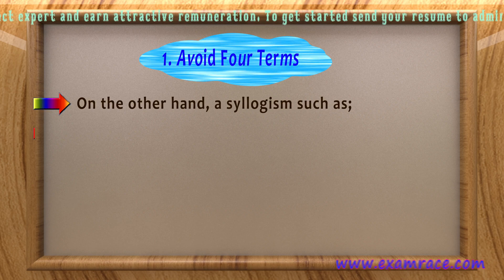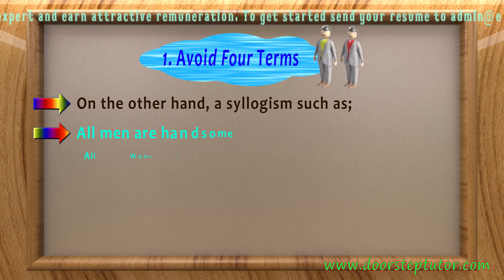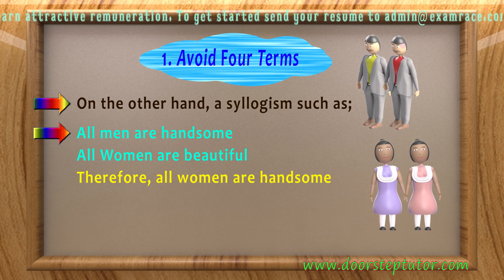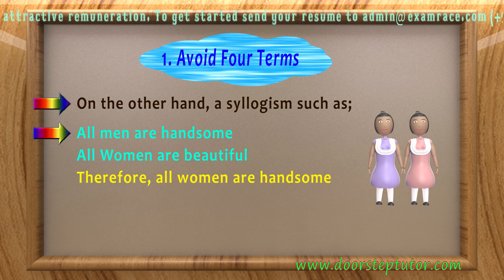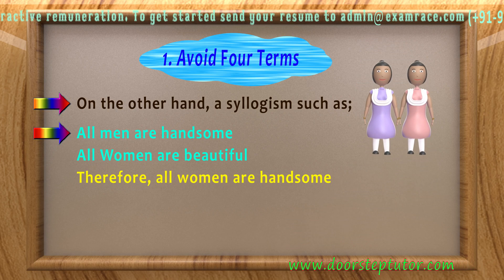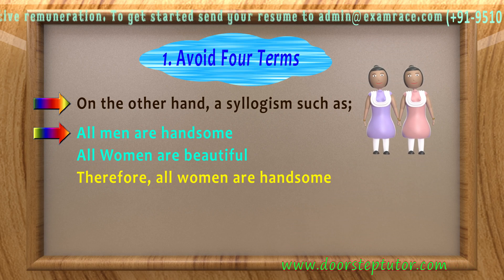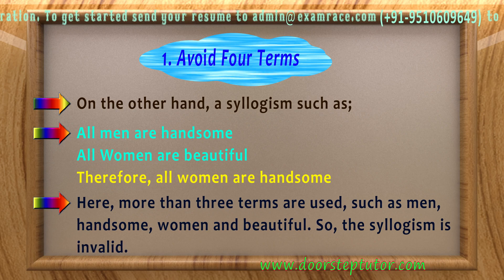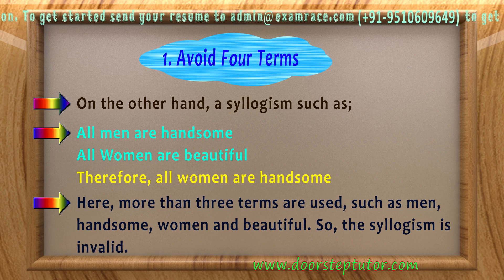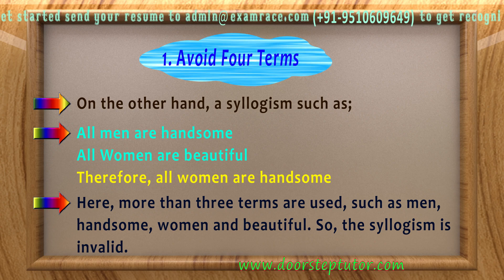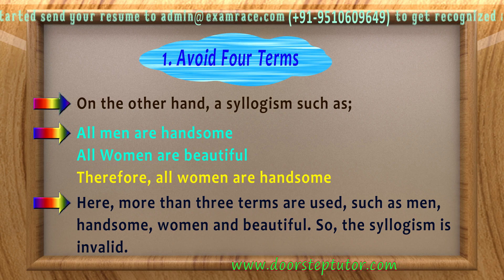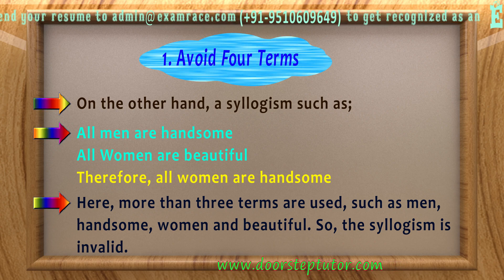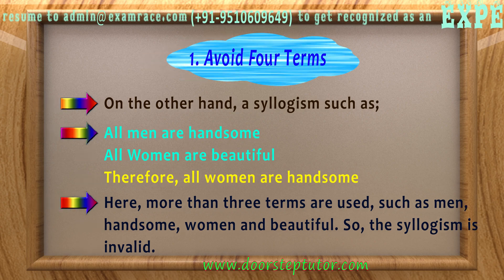On the other hand, a syllogism such as: 'All men are handsome; all women are beautiful; therefore all women are handsome' uses more than three terms — men, handsome, women, and beautiful — so the syllogism is invalid.